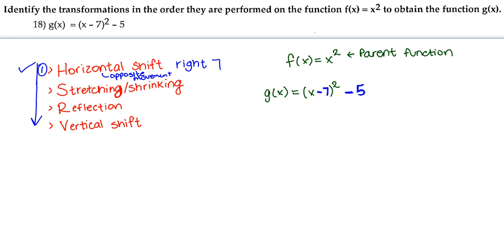The next possible transformation is a stretch or a shrink. That refers to if the function had a number being multiplied right next to the x, or a number right outside the parentheses being multiplied to what's inside. We don't have a number being multiplied to anything, so we are going to disregard stretching or shrinking.